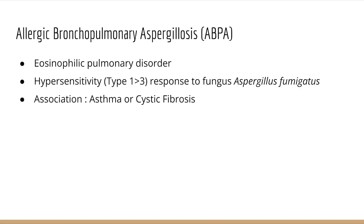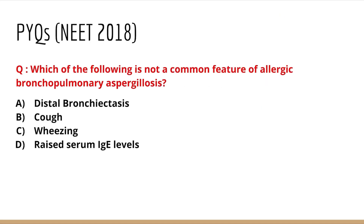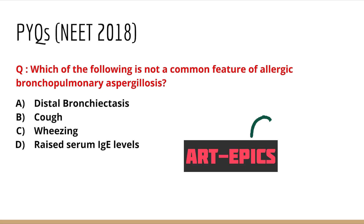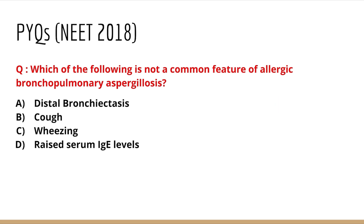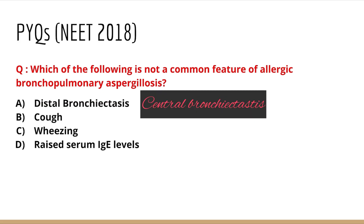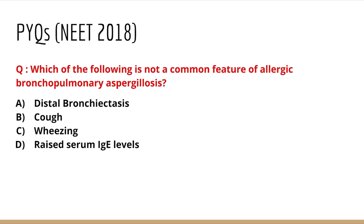Going back to the question: which of the following is not a common feature of ABPA? Options are distal bronchiectasis, cough, wheezing, and raised serum IgE levels. Patients definitely have cough and wheezing, and in the criteria ART EPICS, I stands for IgE levels — so raised serum IgE is part of the criteria. But distal bronchiectasis is not found in ABPA; it is rather central bronchiectasis which is the characteristic finding.